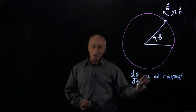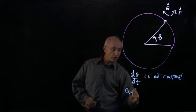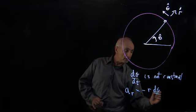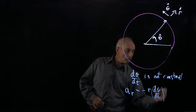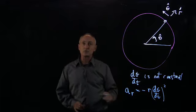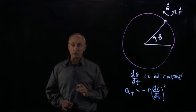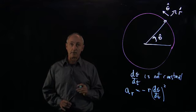So in this instant, we always know that there is a radial component at any instant given by minus r (dθ/dt) squared. But because it's speeding up and slowing down, there is now a non-zero tangential component to the acceleration. And let's see where that comes from.